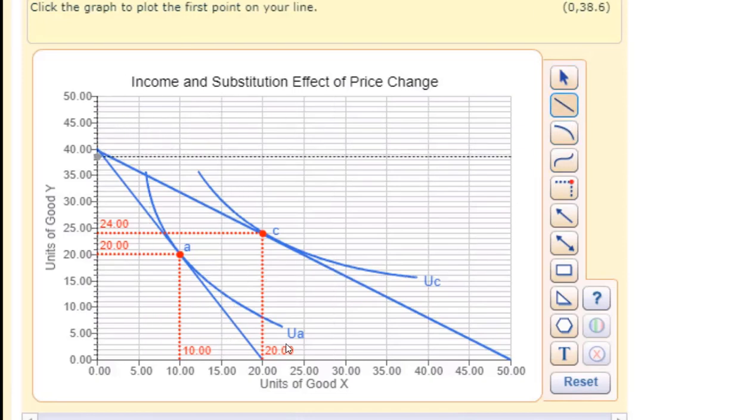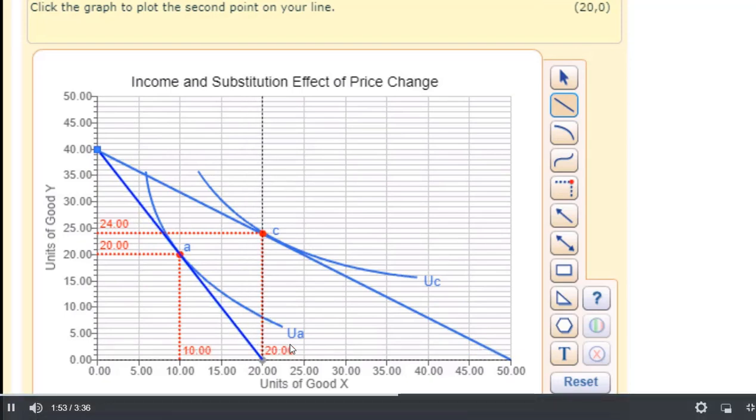So the first thing we're going to do here is get the income effect. So I'm drawing another budget constraint that lies right over the original budget constraint and then I'm just doing a parallel shift out. So what we're doing here is we're going to isolate the income effect. So you take your original budget constraint and we're going to just do a parallel shift out until it is tangent to our new indifference curve. And this will isolate the income effect.